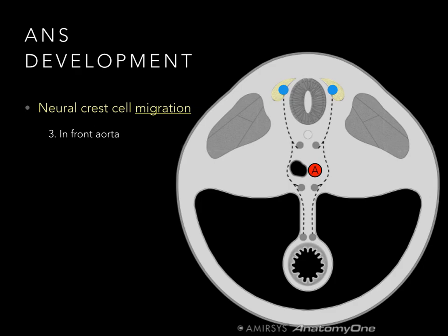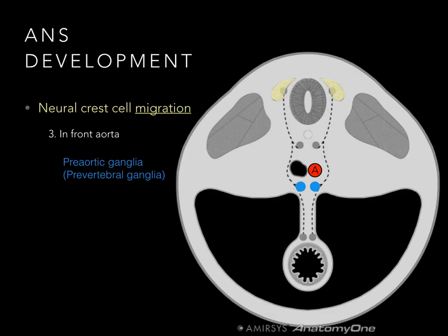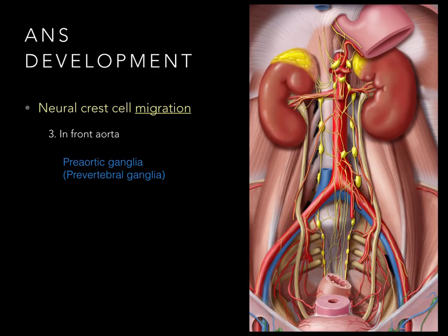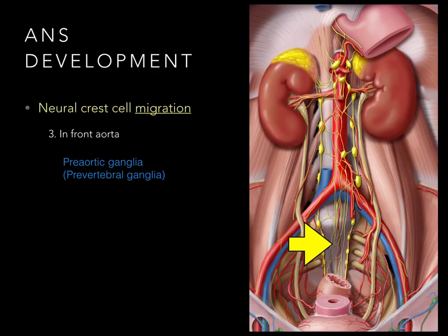Some neural crest cells migrate in front of the aorta, and we call those the pre-aortic ganglia, or pre-vertebral ganglia, because they're in front of — as opposed to the side of — the vertebrae. Those pre-aortic ganglia include the celiac ganglion, superior mesenteric ganglion, aorticorenal ganglion, and inferior mesenteric ganglion, all in front of the aorta. Both paravertebral and pre-aortic ganglia deal exclusively with sympathetics.